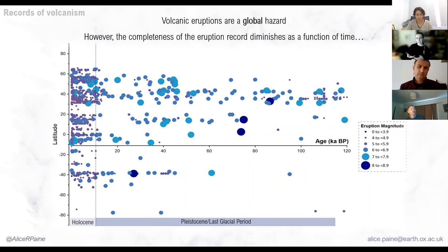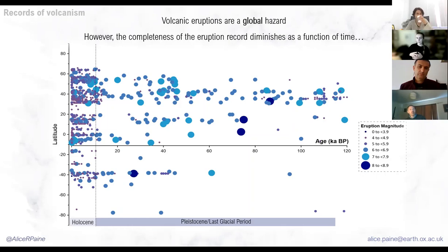These events are far beyond the scale that we can comprehend as humans, bigger than anything we've ever experienced ourselves. But that doesn't mean they're never going to happen again — they're going to happen again. Because of that, we really want to understand how these really big volcanic eruptions have impacted the Earth and the environment, and what sort of timescales these effects operate on — how long they may persist and affect different parts of the Earth: the oceans, the atmosphere, even the cryosphere, the ice at the poles.